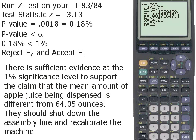We did have sufficient evidence that the population mean was different from 64.05 ounces. Now, if it's not 64.05, then what is it? The hypothesis test only tells us that the population mean is most likely not 64.05 ounces. But what if you want to know what it is equal to? This is what a confidence interval is for.